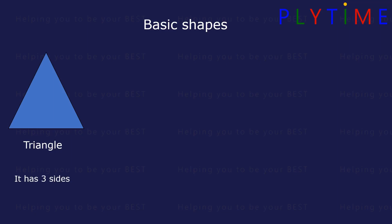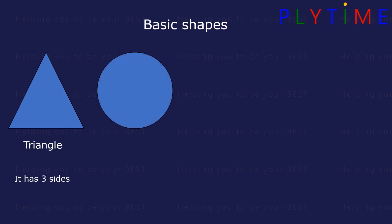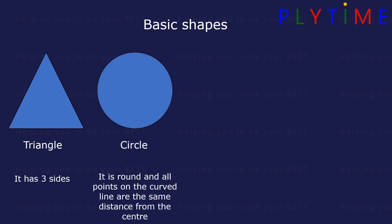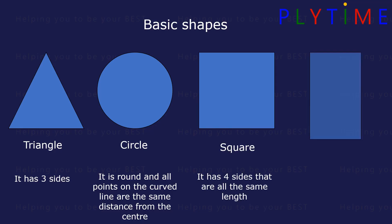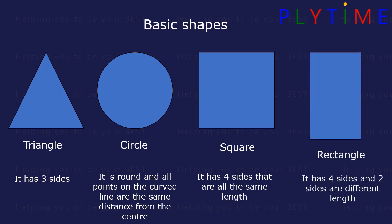This is a circle. It's round and all the points on the curved line are the same distance from the centre. This is a square. It has four sides that are all the same length. This is a rectangle. It has four sides and two sides are different lengths.